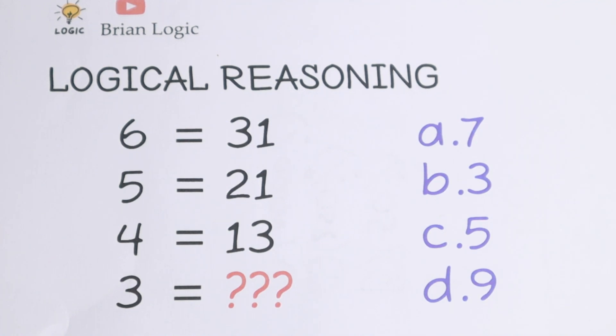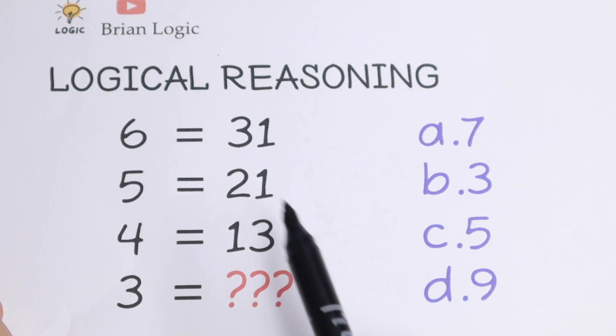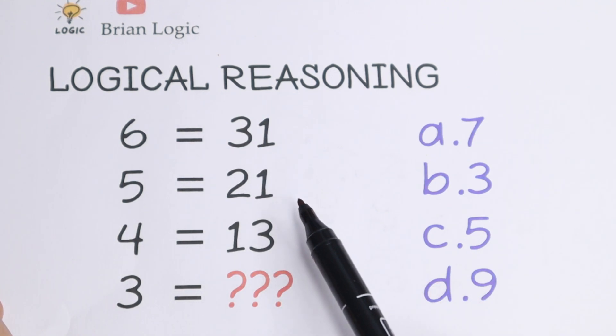Hello everyone and welcome back to my channel. In this video we're going to solve this interesting logical reasoning problem. We have 6 equals 31, 5 equals 21, 4 equals 13, and we need to find what 3 equals.